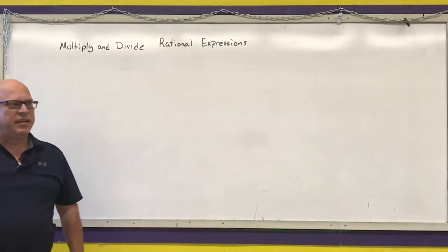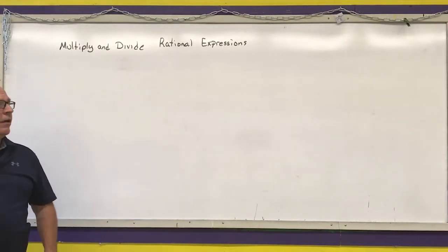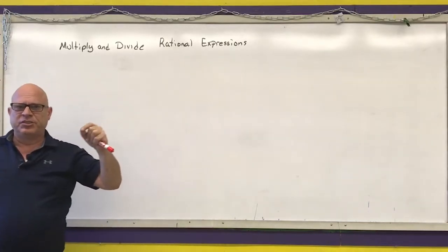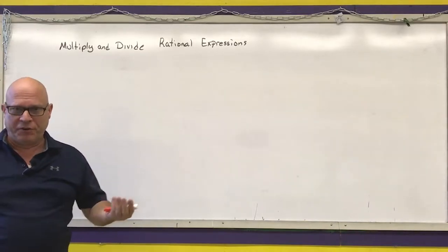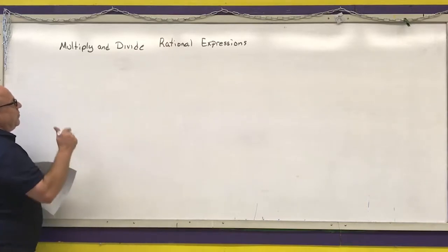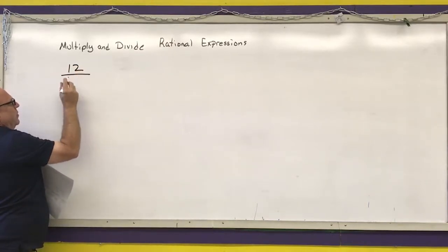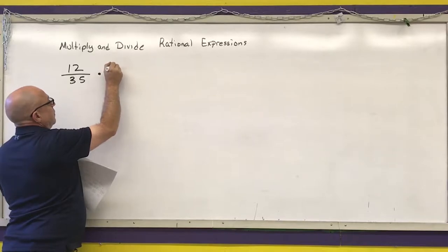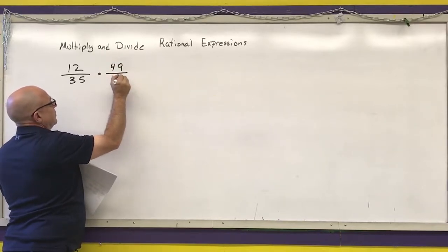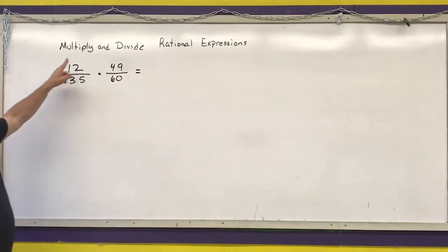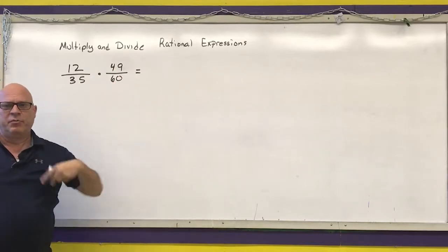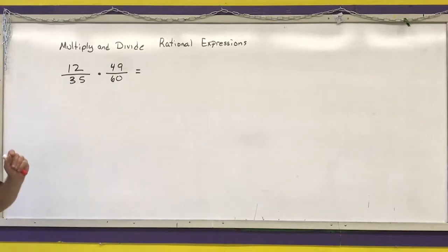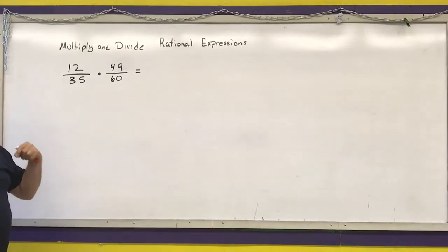We're now going to cover multiplication and division of rational expressions. Just like our other operations with rational expressions, they're very similar to what we did with rational numbers or fractions. So if I want to multiply or divide a fraction — for example, twelve thirty-fifths times forty-nine sixtieths — I can multiply the numerators together and then multiply the denominators together. But what I would have told you in middle school is to simplify before you multiply.